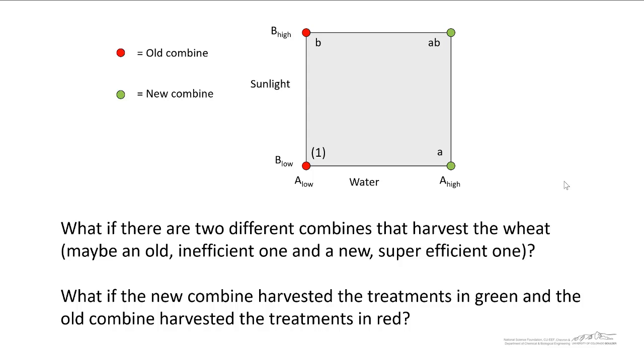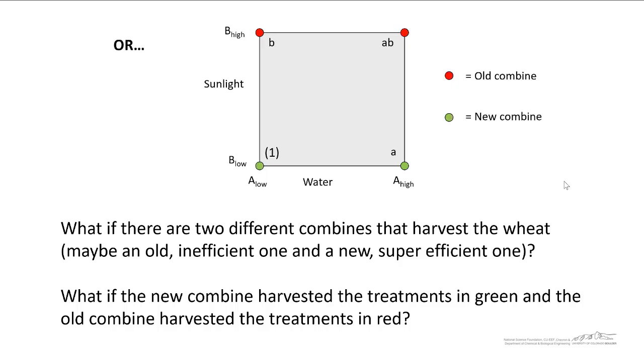So here's one we could harvest the ones on the left here with the old combine, and the ones on the right with the new combine. This means that the experiments with low water would be harvested by the old combine, and those with high water would be harvested by the new combine. And you might be thinking that there's already some issues with this setup, or we could do something similar where we harvest the top two experiments with the old one and the bottom two with the new. And finally, we could put the two different blocks on the corners of this two squared design.